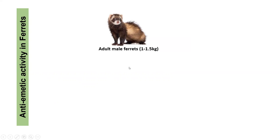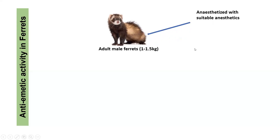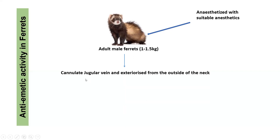In this test, the procedure is as follows: you take adult male ferrets with a body weight of 1 to 1.5 kg and divide the animals into two groups. The ferrets are first anesthetized with a suitable anesthetic agent, and once completely anesthetized, a small surgery is performed — the jugular veins are cannulated and exteriorized from the outside of the neck — after which the animal is allowed to recover.